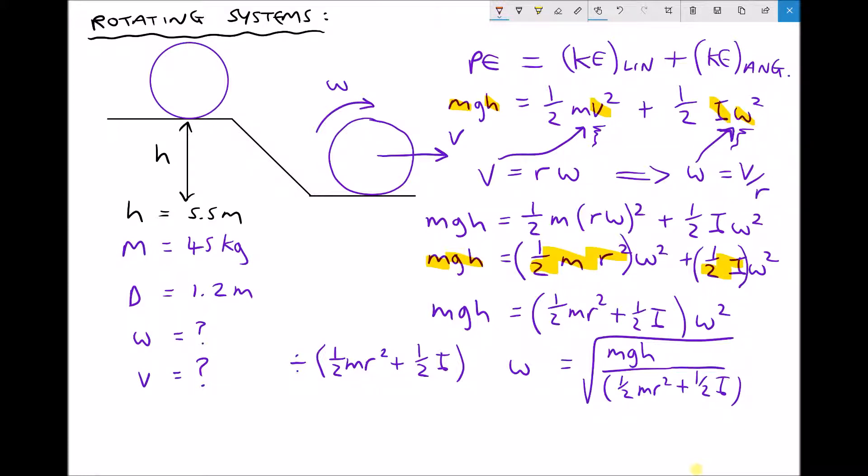Before we do our final calculation we need to calculate our value for i. And i for a solid cylinder is a half m r squared. All of these formulas for moment of inertia are provided on the equations and information sheet. So we have a half times the mass of 45 times the radius squared. Just take care here - we've got the diameter, so the radius is half the diameter or 0.6 squared, giving us a moment of inertia equal to 8.1 kilogram meter squared.